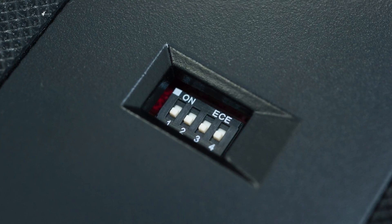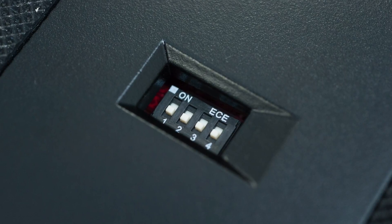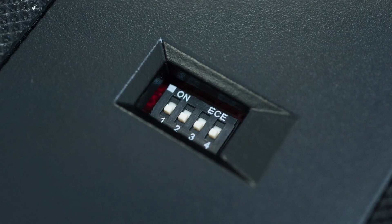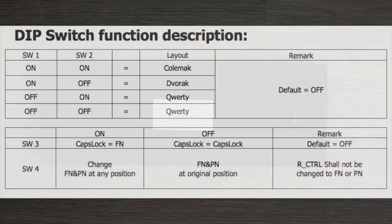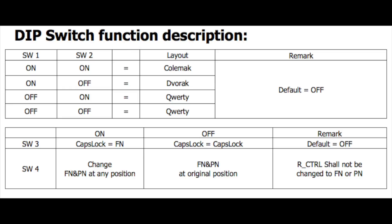Switch 1 and Switch 2 are for you to change the keyboard layouts — Colemak, Dvorak, or by default the QWERTY. I'll just leave you an image extract from the Vortex user manual. It's very straightforward how you can configure the switches.